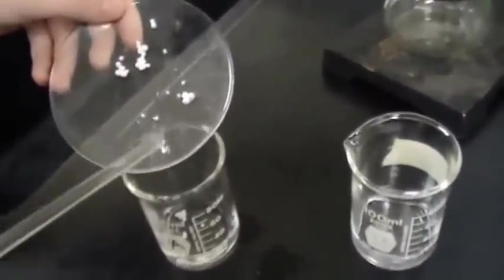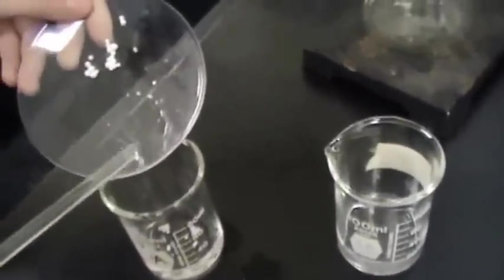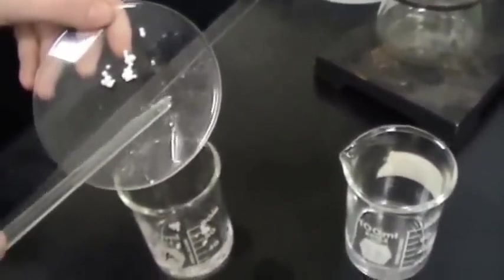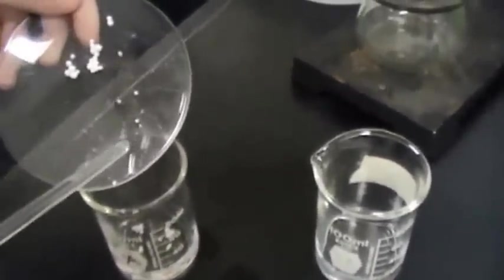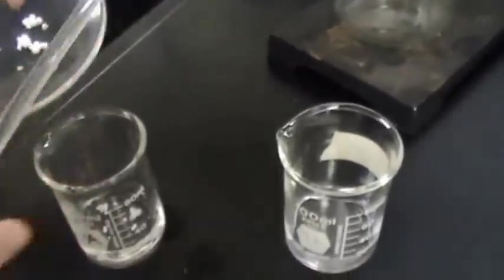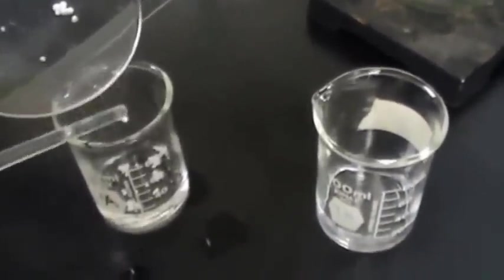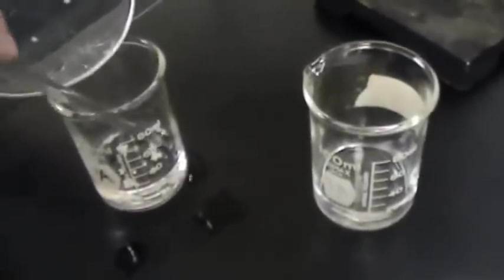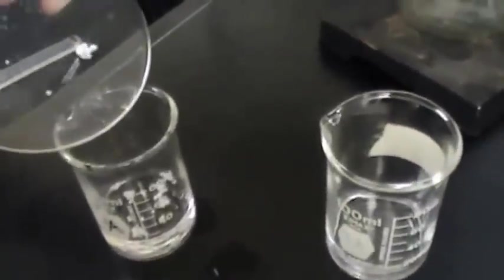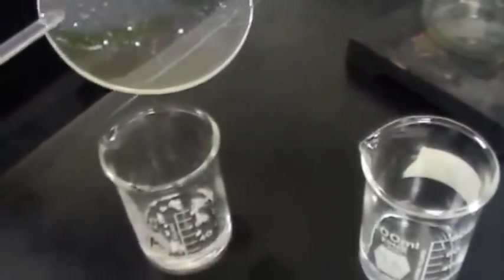We're dissolving the calcium chloride into distilled water or deionized water. We're going to do the same thing with the sodium carbonate, and then we're going to mix the two solutions together and record all observations.